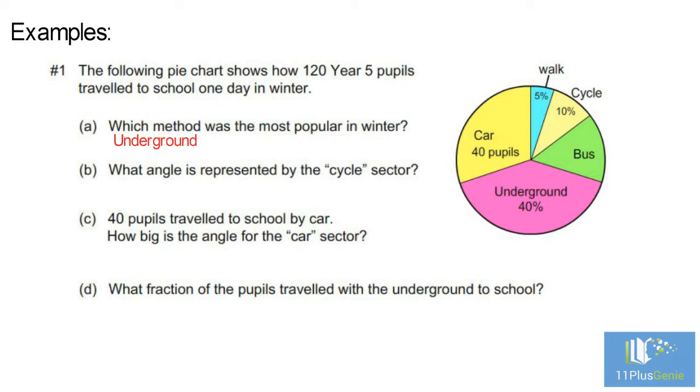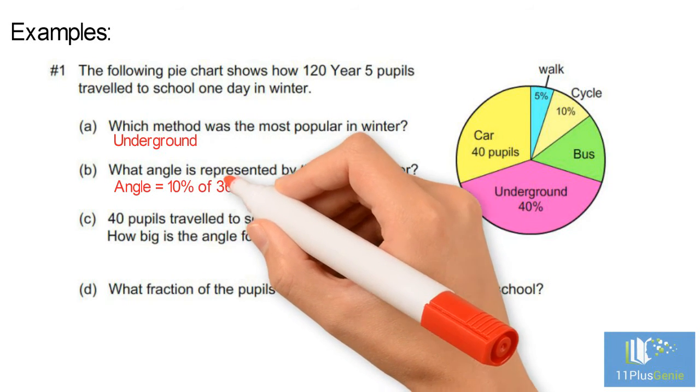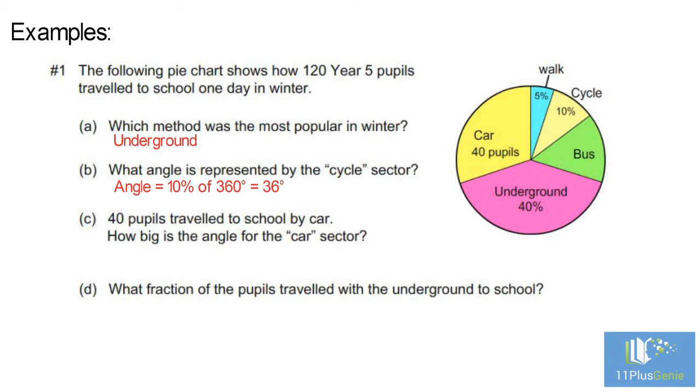B. What angle is represented by the cycle sector? The cycle sector is 10%. That means that the angle is 10% of 360 degrees, which gives us 36 degrees.